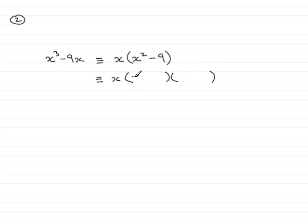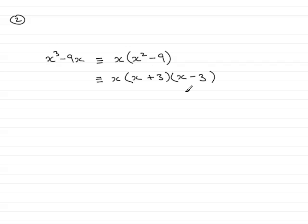In here would go an x and an x to give x squared, and then you have plus 3 and minus 3. And this would multiply out to give x squared minus 9. We now have three factors, and as a final check, none of these factors can be factorized any further. So that brings us then to the end of question 2.